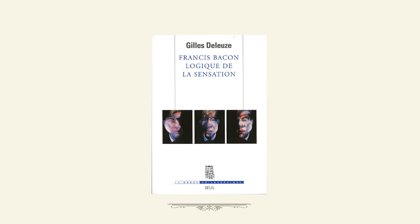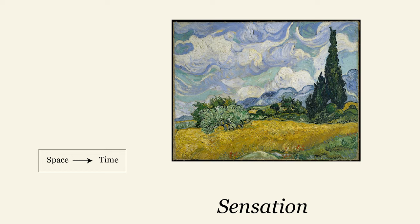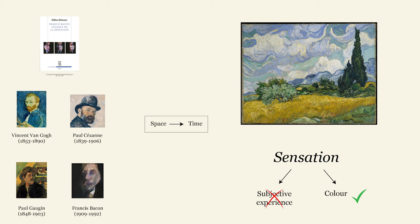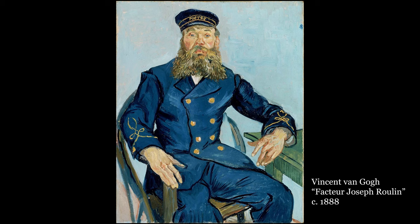In The Logic of Sensation, Deleuze demonstrates how modern painters have shifted the central emphasis of painting from space to time. But how can a still image show time? Deleuze's fantastic answer is through sensation, but not sensation understood as a personal or subjective experience. Rather, sensation understood as a certain treatment of color. Take for example Factor Roulant by Van Gogh. We can immediately feel that something unique is happening here that could not have happened in classical times.